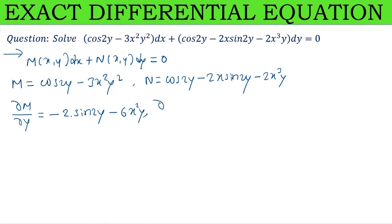Now differentiate N with respect to x partially, treating y as constant. First term cos 2y is constant, becomes 0. Second term -2x sin 2y: -2 and sin 2y are constants, x becomes 1, giving -2 sin 2y.